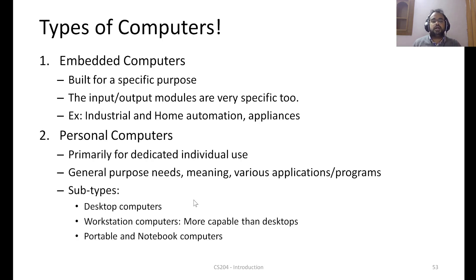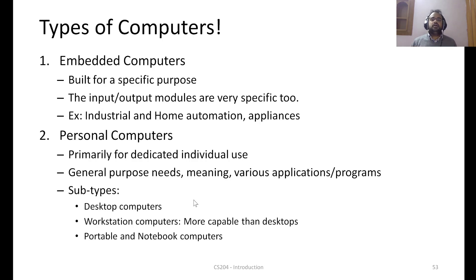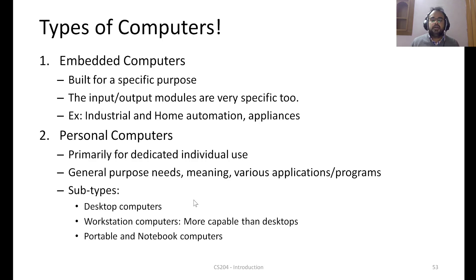The second type is personal computers, which everyone is familiar with. They are primarily for dedicated individual use and are built to handle any general-purpose applications or programs. This is the primary difference from embedded computers — embedded computers can handle only very specific programs, whereas personal computers handle general ones. These include desktop computers and workstations.